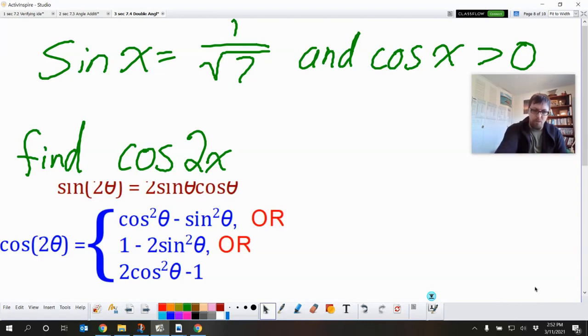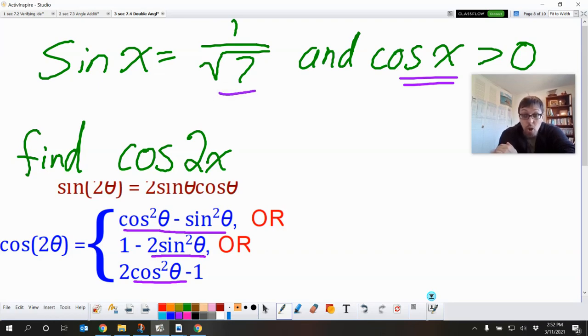Now, if I use the top one, I'd have to know what cosine of x is. And I don't know what it is. All I know is that it's positive. If I use this one, again, I'd really need to know what cosine is. I don't know what cosine is. I just know it has to be positive. If I use this one, I just need to know what sine is. And they told me already. Those idiots. They gave me everything I needed.